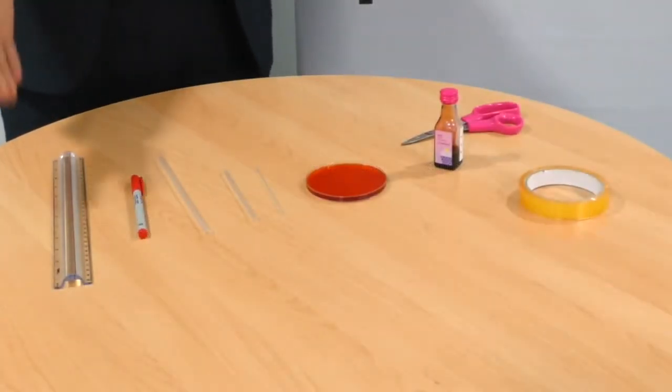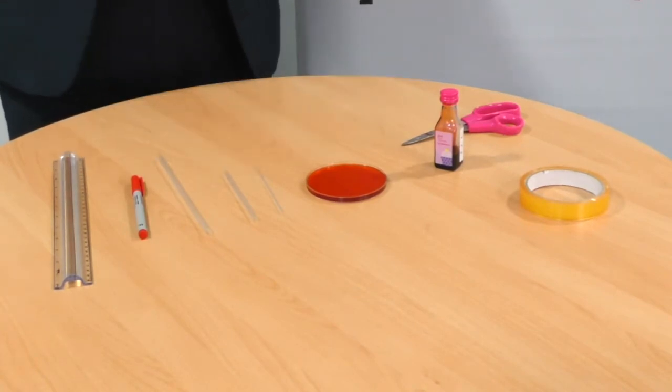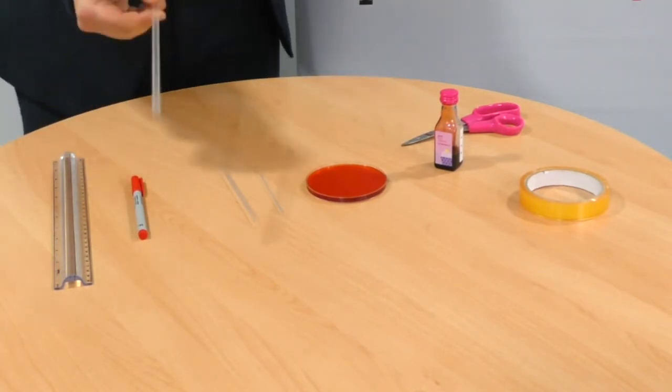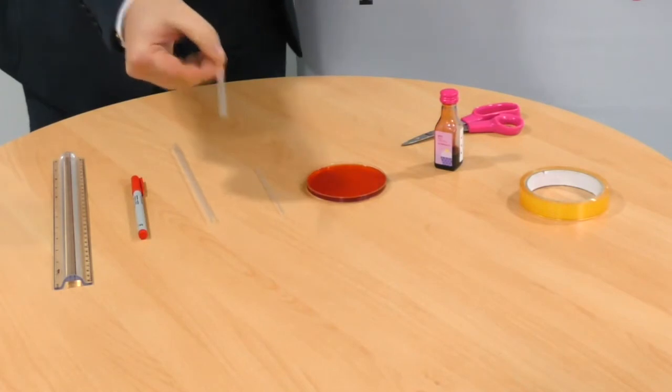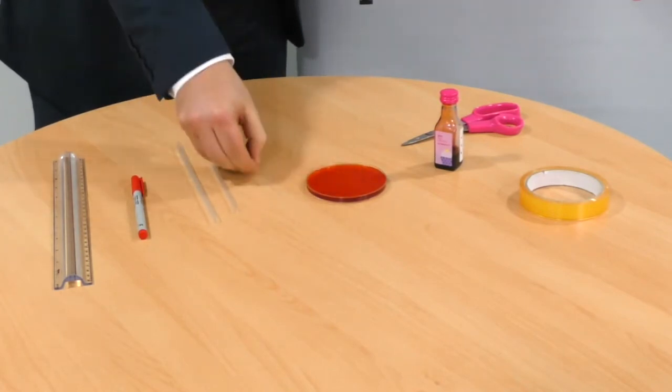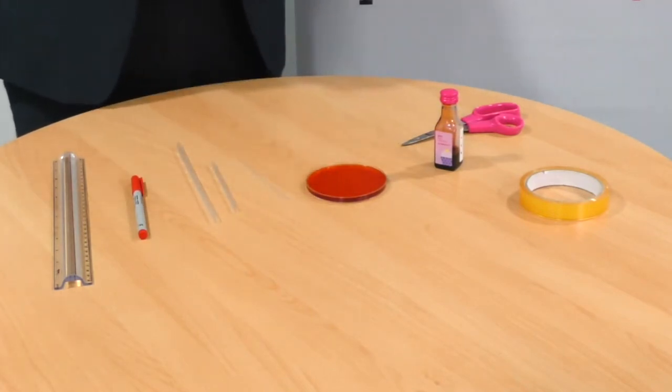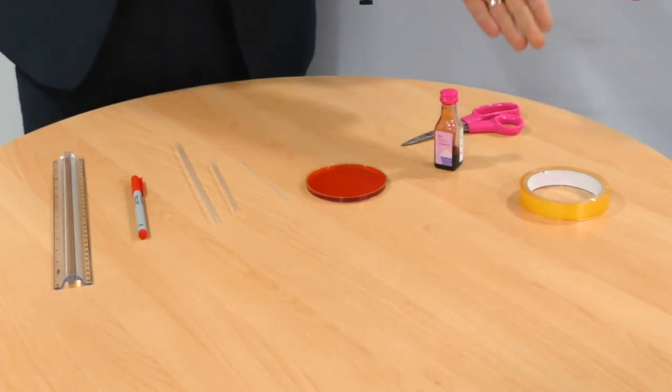For this activity you will need a ruler for measuring, a pen for marking, three straws - one large, one medium and one small - a petri dish filled with water with a few drops of food coloring, some sellotape and some scissors.